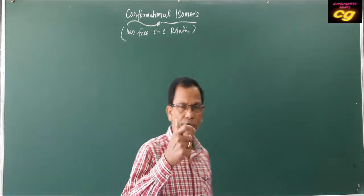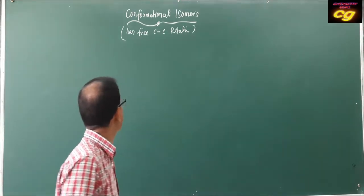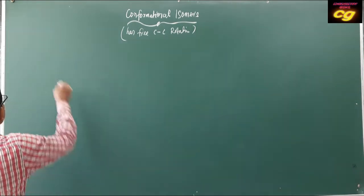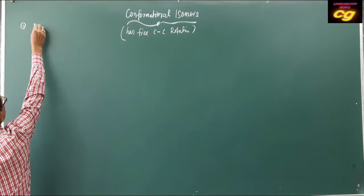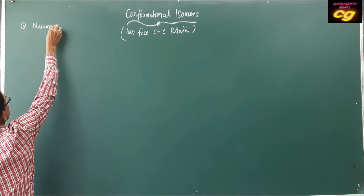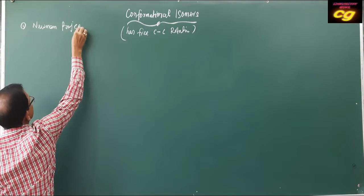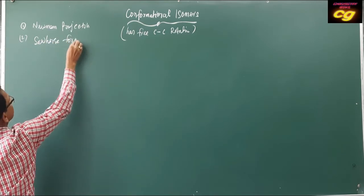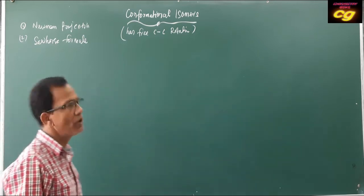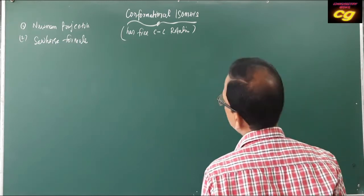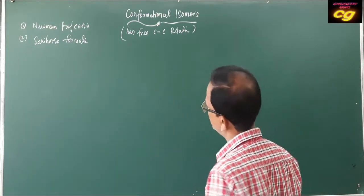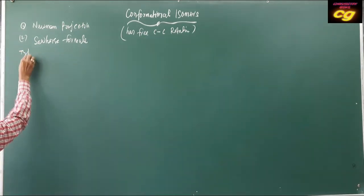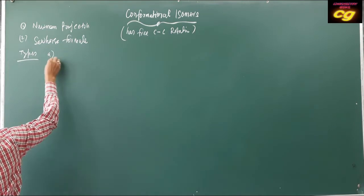Conformational isomers can be interconverted by free rotation of carbon-carbon bonds. They can be expressed in two forms: either in Newman projection form or in Sawhorse formula. Generally, if you discuss the types of conformational isomers, the first one is the staggered form.